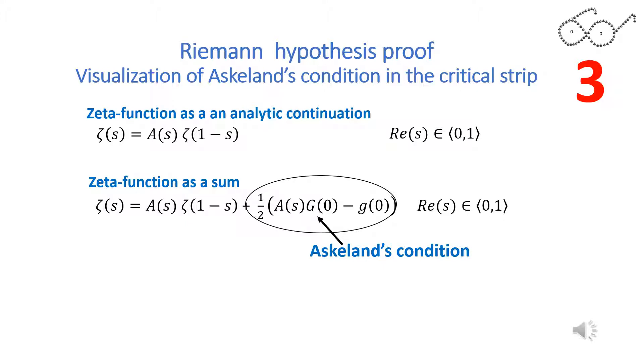As I showed in my proof, it is fairly easy to show with Fourier transform that the zeta function as a sum is equal to Riemann's functional equation plus a condition. In order to comply with Riemann, that condition has to be 0.